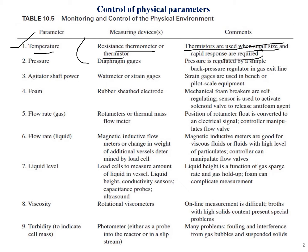The third parameter is agitator shaft power, which is measured with the help of a wattmeter or strain gauges. Strain gauges are used in bench or pilot scale equipment, which is a different setup altogether in a bioreactor.